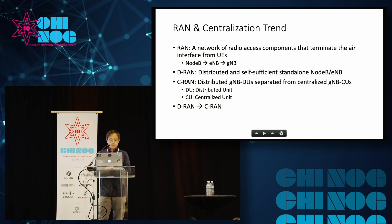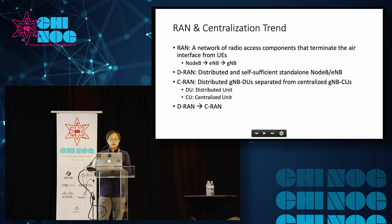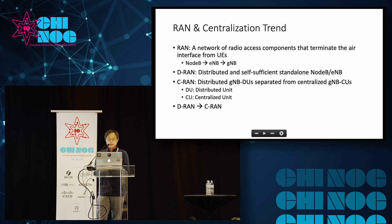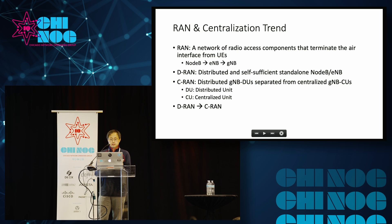RAN, radio access network, is basically a network of radio access components that terminate the air interface from the UEs. Over the generations, they have evolved from the original Node B to eNodeB in 4G, and then finally to gNodeB in 5G. In the early days, the RAN is distributed, meaning those components — Node B or eNodeB — are distributed as self-sufficient standalone units.